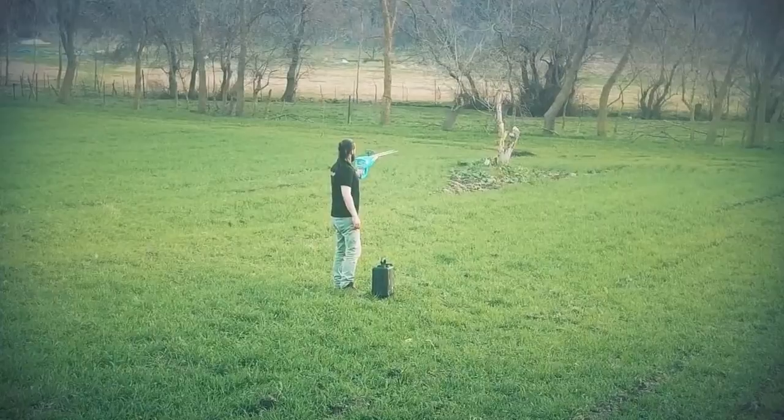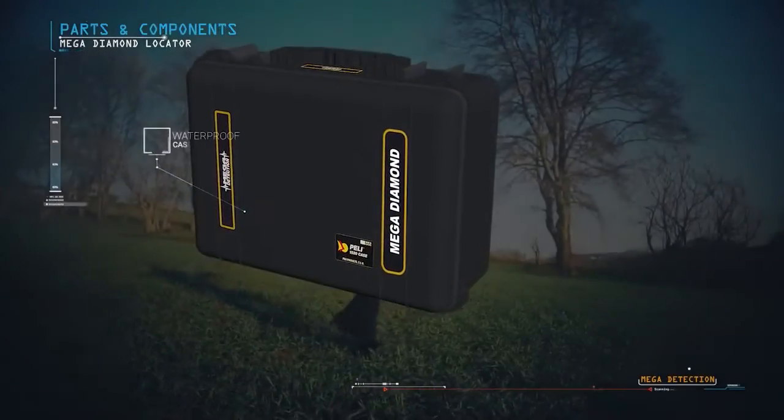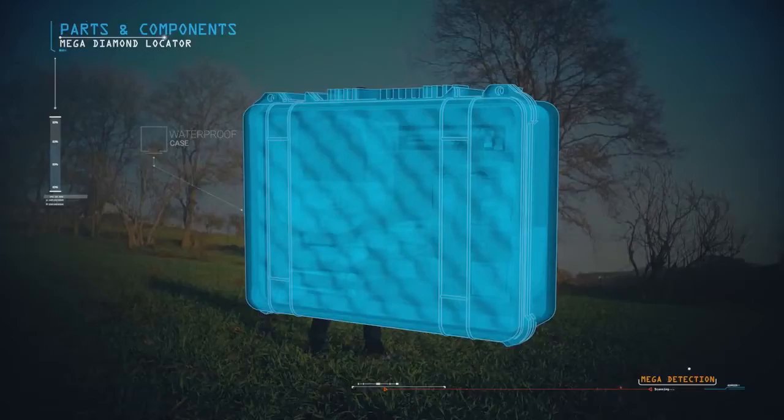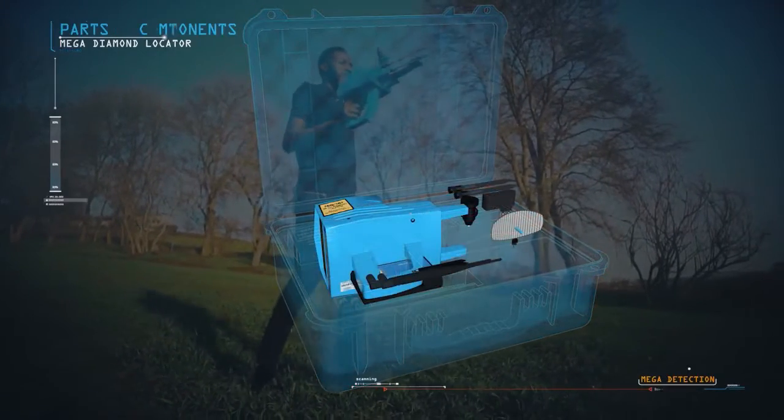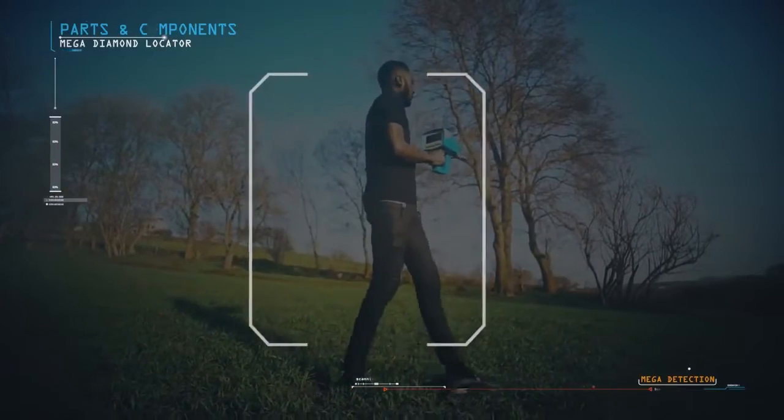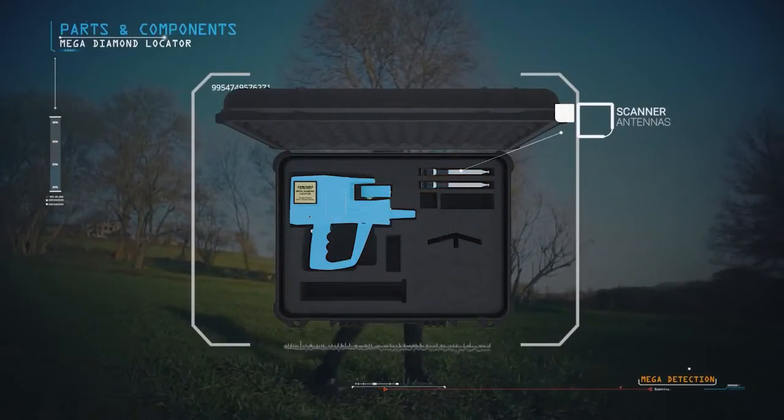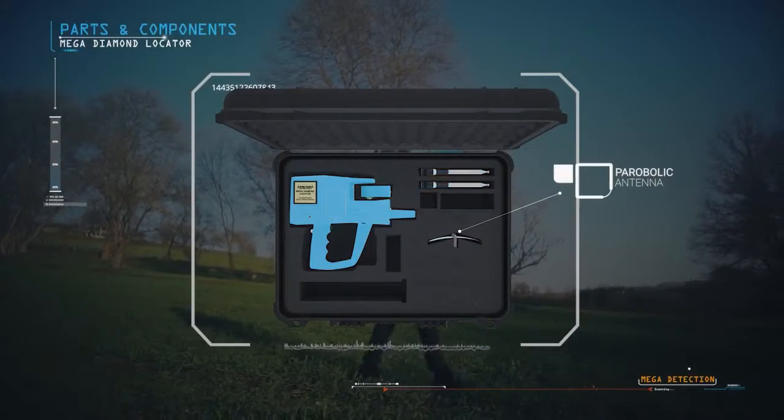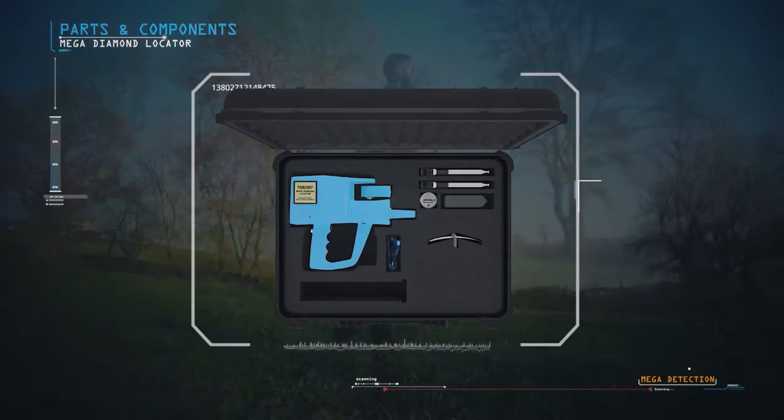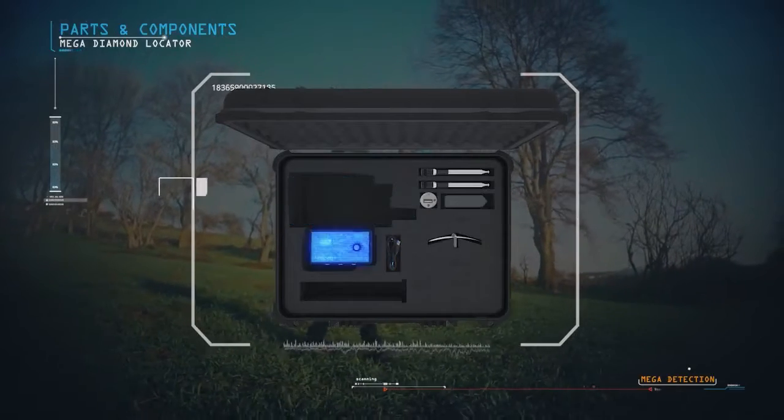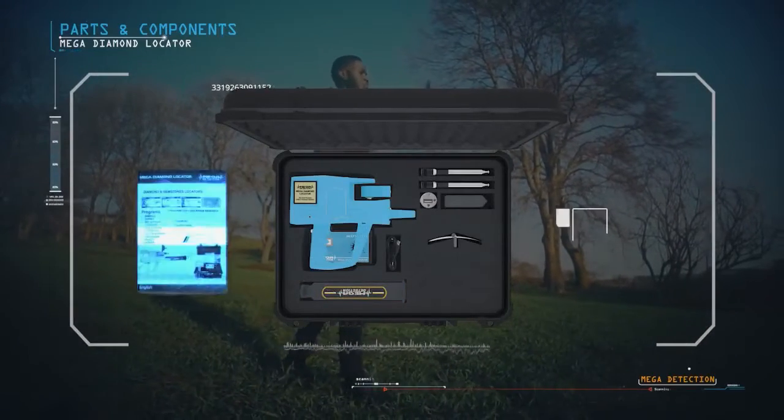Parts and components of the device: Waterproof case, main control unit of the device, scanner antennas, parabolic antennas, auto charging adapter, charging adapter cable, depth measurement unit, and user manual.